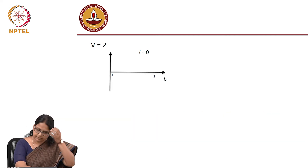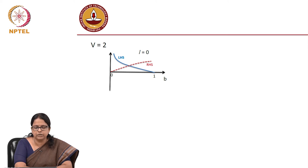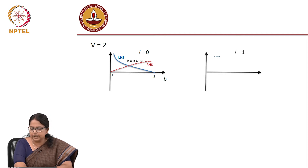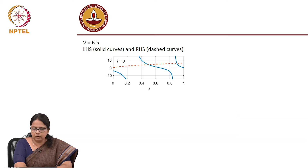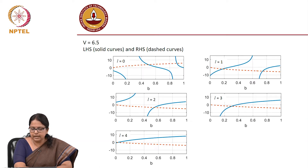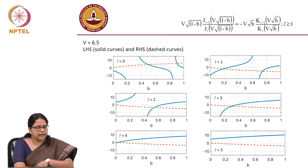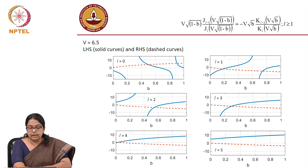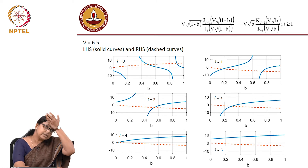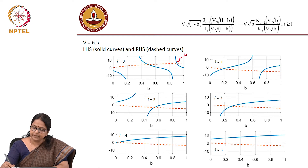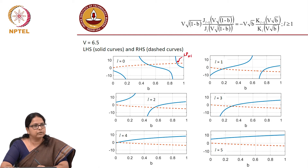We were trying to see the solution for L equal to 0. For example, V equal to 2 gave us only one point of intersection, so we say that there is only one mode supported and that corresponds to LP01. I also showed an example where V was 6.5 and corresponding to V equal to 6.5, L equal to 0 gave us two solutions. We did a nomenclature for all of this and named the first solution as LP with L equal to 0 and the first solution. This is the most fundamental mode of the fiber.